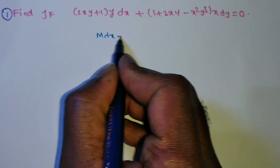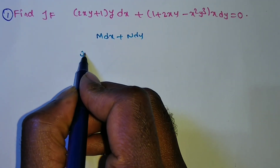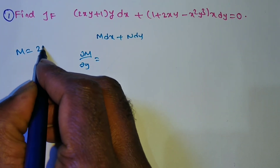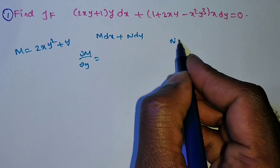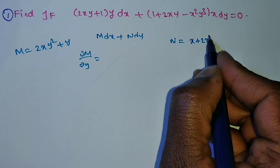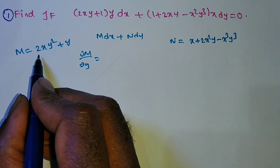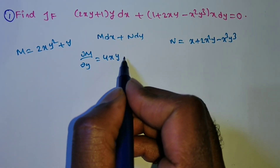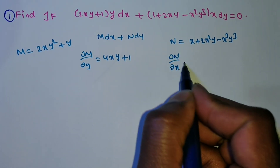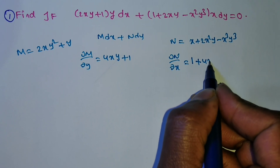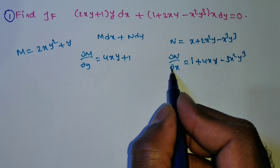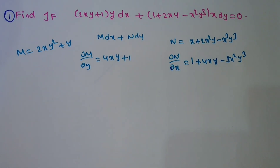This is in the form of M dx plus N dy. So ∂M/∂y — check it. First, what is M? M is equal to 2xy² + y, and N is equal to x(1 + 2x²y − x³y³). Now ∂M/∂y: y² derivative is 2y, so ∂M/∂y = 4xy + 1. Now ∂N/∂x = 1 + 4xy − 3x²y³, because with respect to x we are doing, so y is a constant. These both are equal.